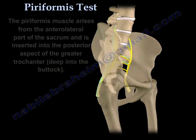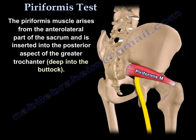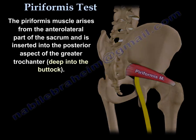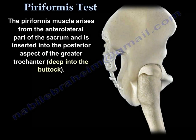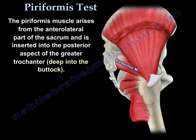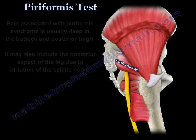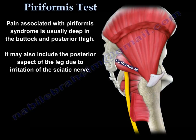Let's talk about the piriformis syndrome and piriformis test. The piriformis muscle arises from the anterolateral part of the sacrum and is inserted into the posterior aspect of the greater trochanter, deep into the buttock. The pain associated with piriformis syndrome is usually deep in the buttock and the posterior thigh.